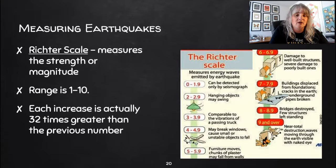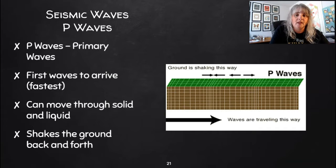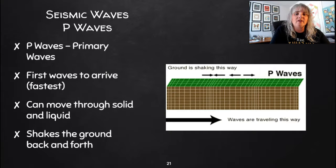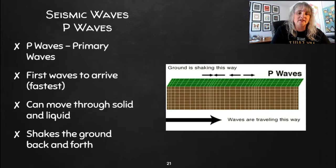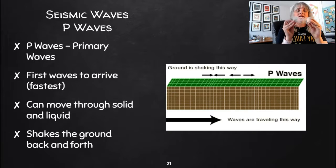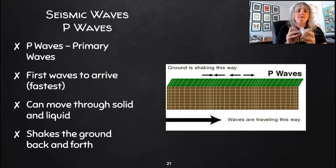Now we're going to talk about what causes that destruction — seismic waves. We've talked a little bit about seismic waves with layers of the Earth and how they use seismic waves to tell what the different layers are. The very first seismic wave is called the P wave, or primary wave. It is the first to arrive and the fastest wave. It can move through solids and liquids, and it shakes the ground back and forth. P waves basically go like this — back and forth.